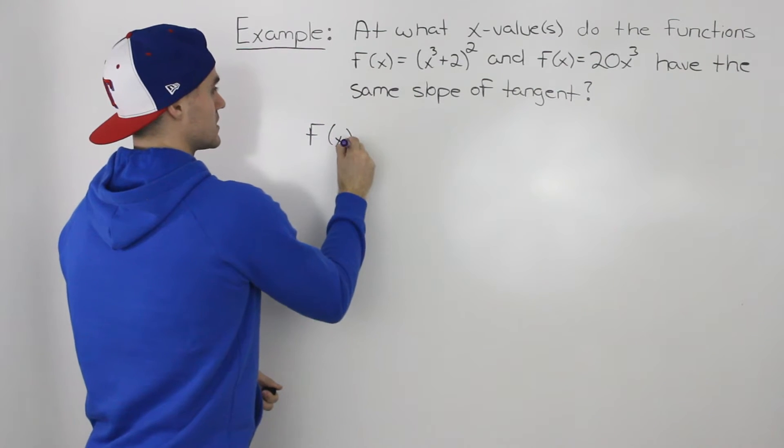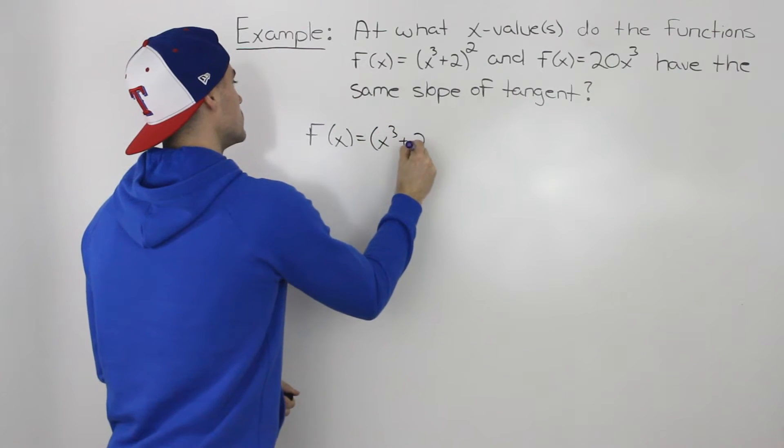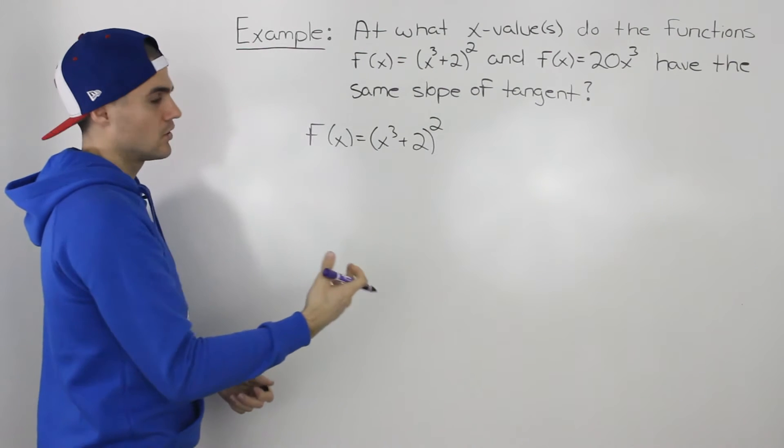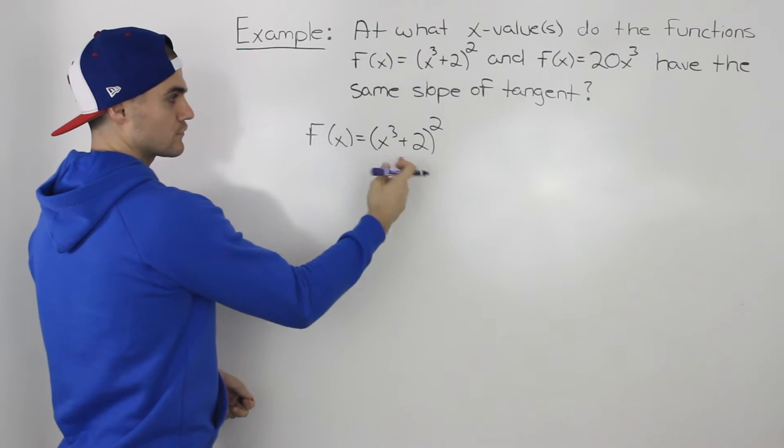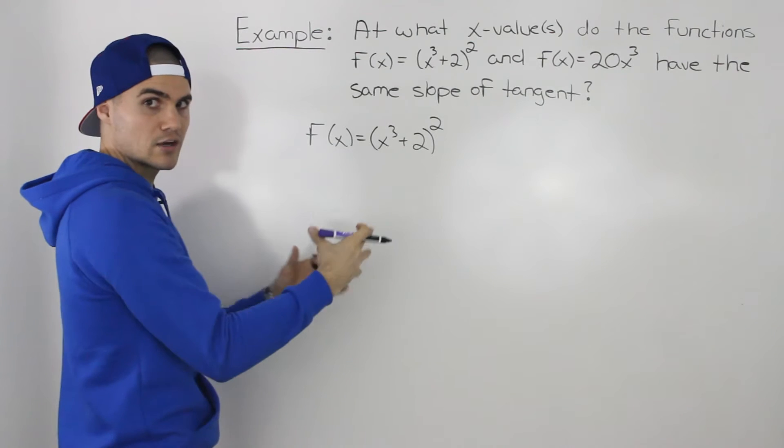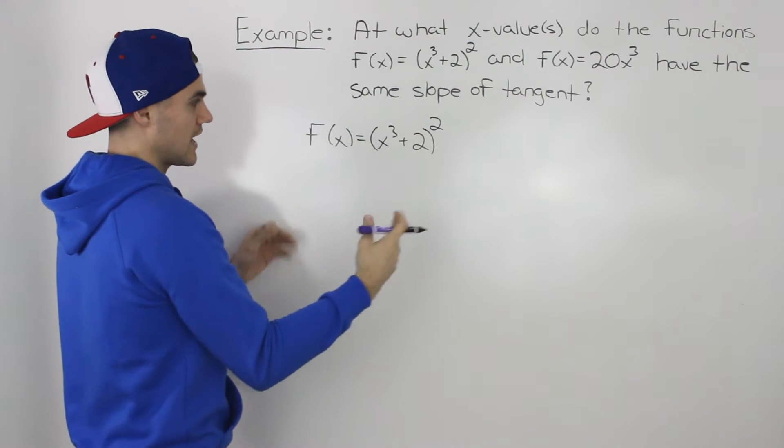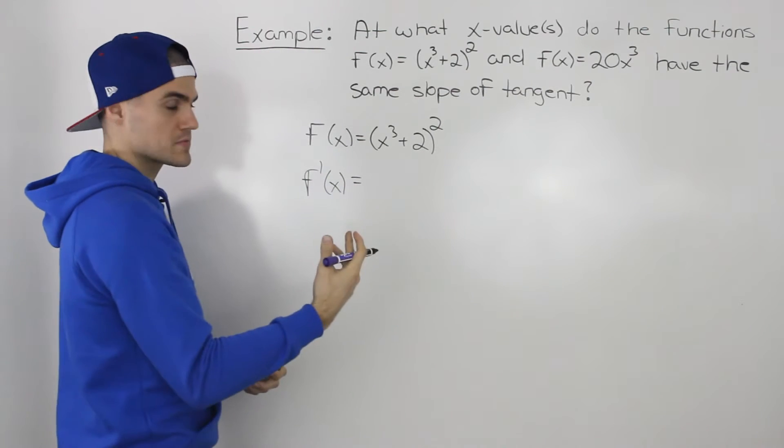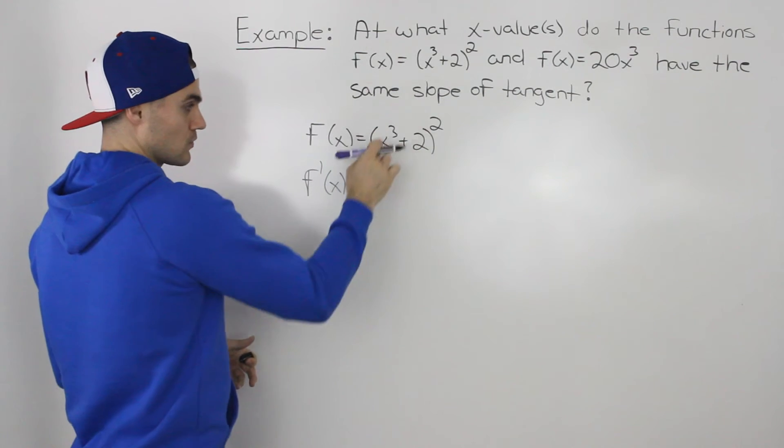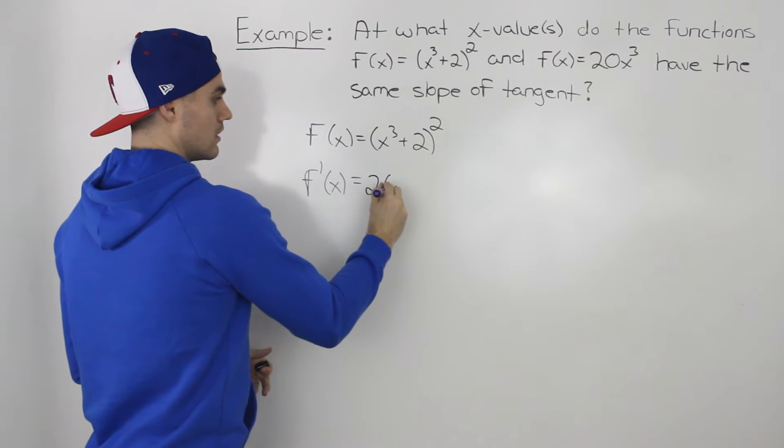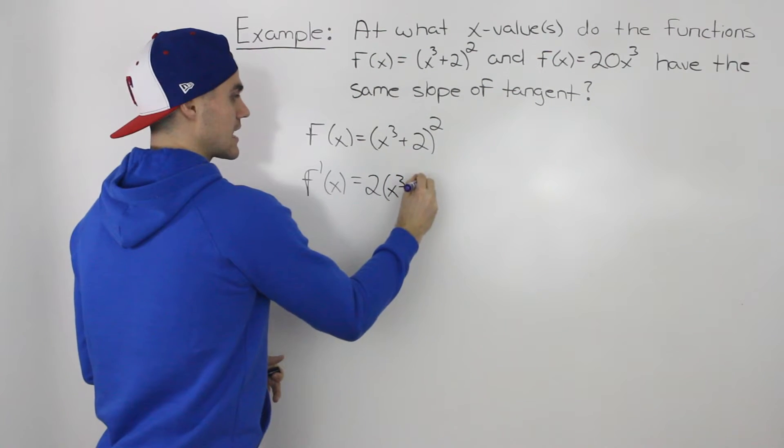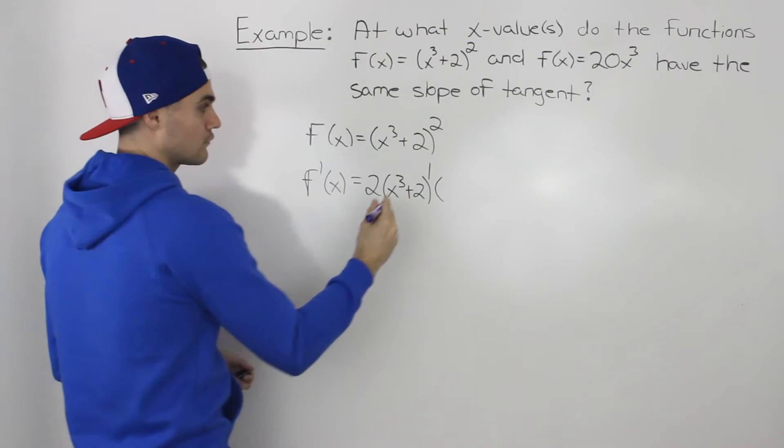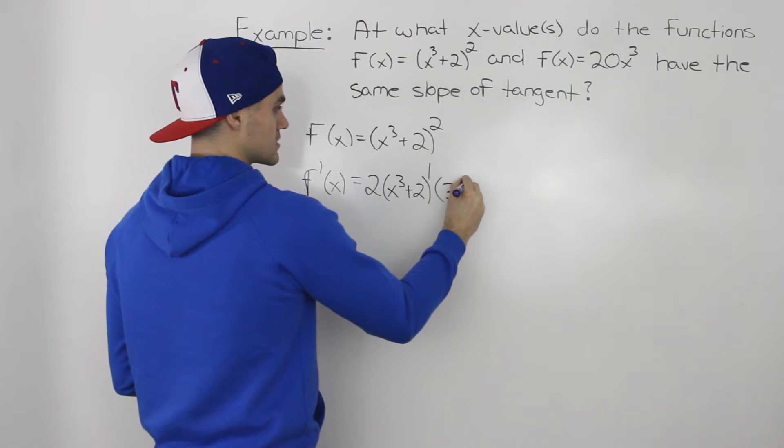Let's take this function first. We got f(x) equals (x³+2)². Now to find the derivative of this, notice how it's a function within another function. This x³+2 is the inner function. The square is the outer function. So to find the derivative, we would apply the chain rule or more specifically the power of a function rule. We would bring the 2 down, the inner function stays the same, subtract 1 from the exponent, and then multiply it by the derivative of that inner function which is 3x².